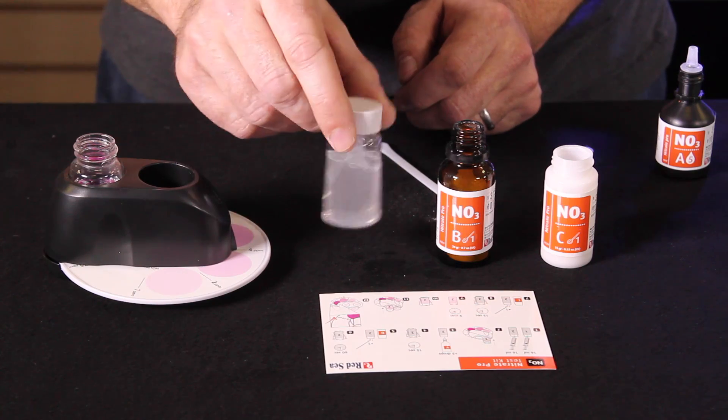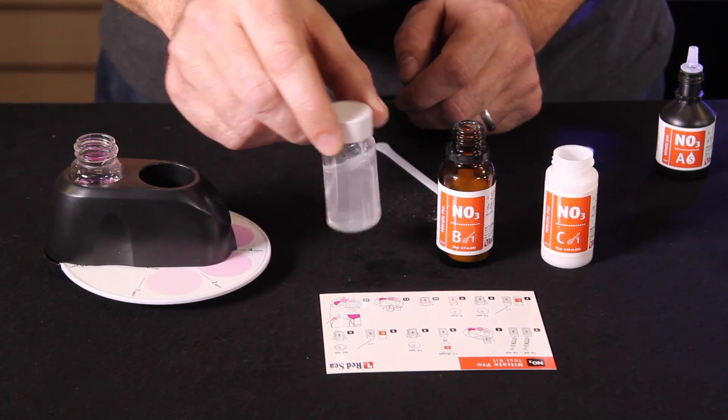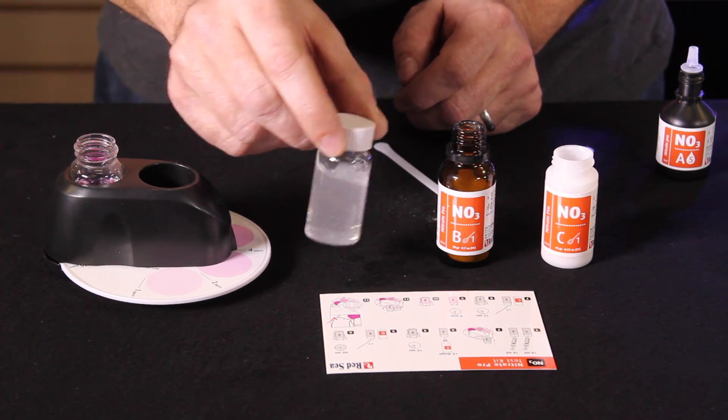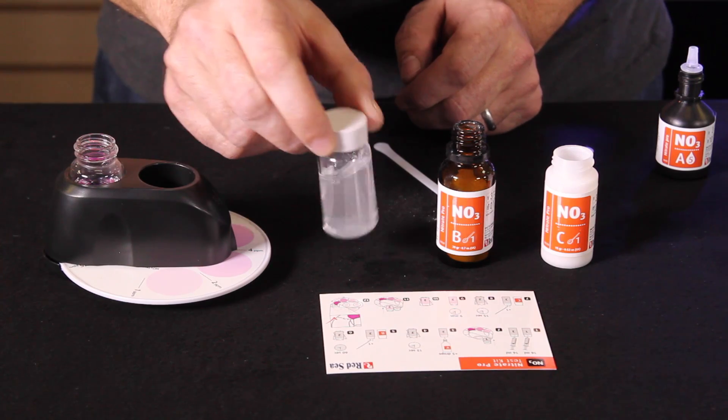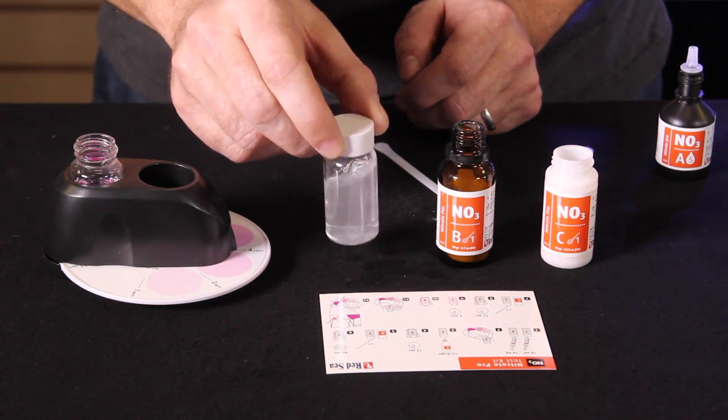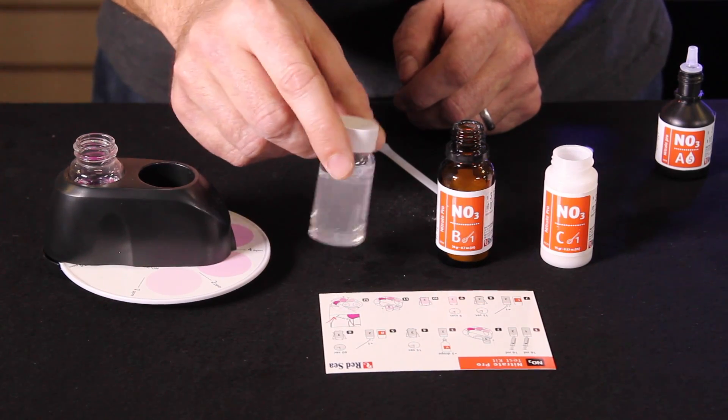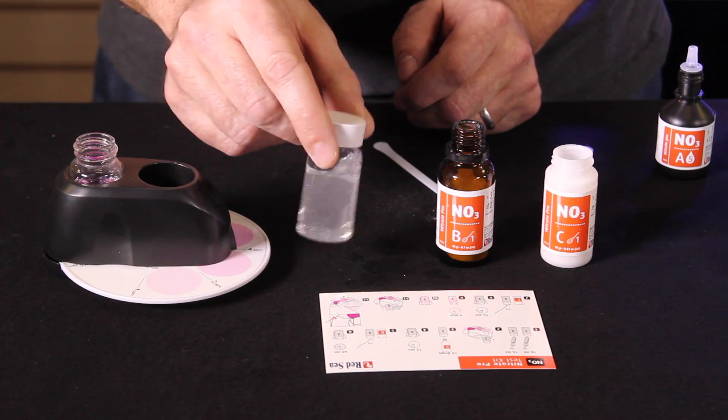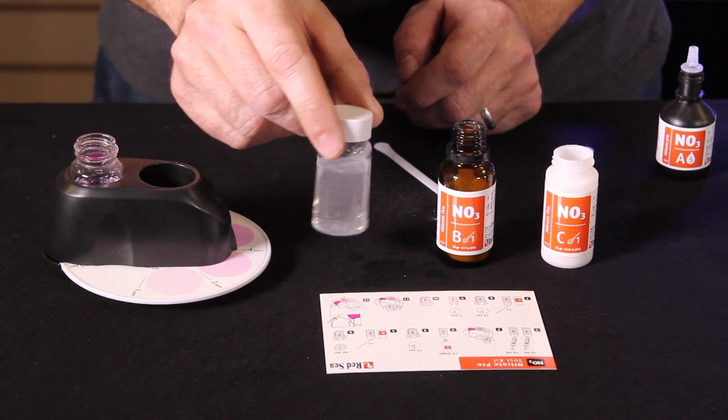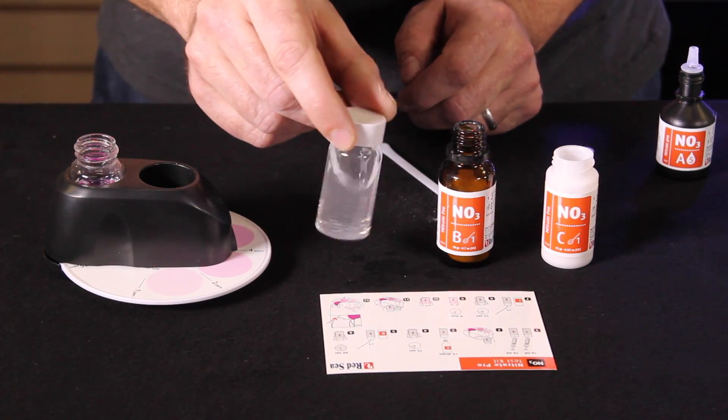Nitrates are very important to control in any saltwater aquarium because if they get out of hand they can cause fish to get sick, be more susceptible to disease, corals won't open as well and also not color as well. The big thing is you're going to have a lot more algae growth which again leads to more nitrates as that dies and gets cleaned off the glass. So controlling nitrates and phosphates is definitely very important for any reef aquarium.